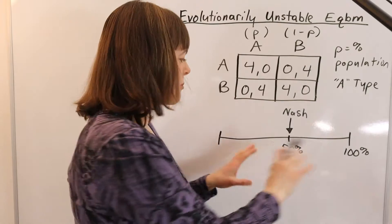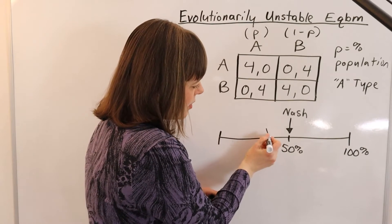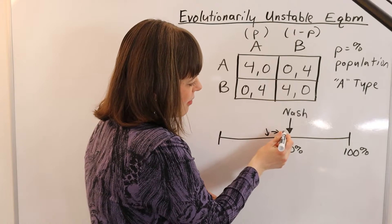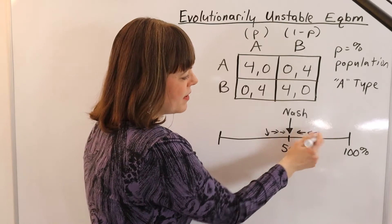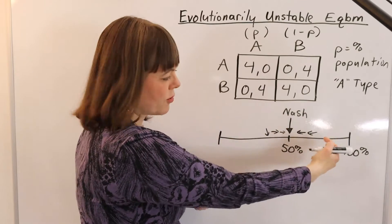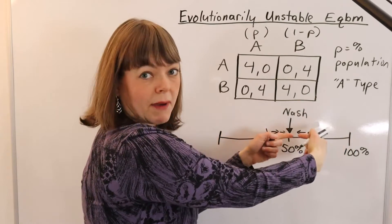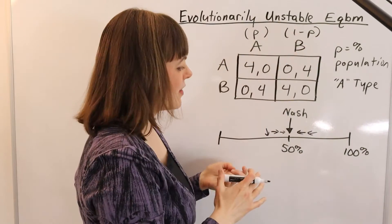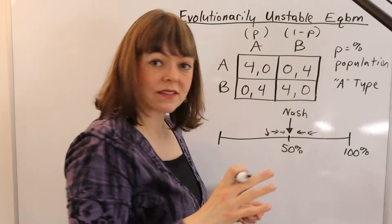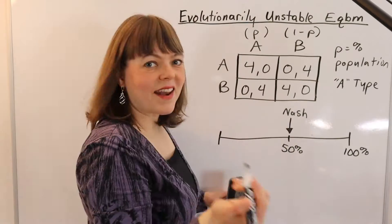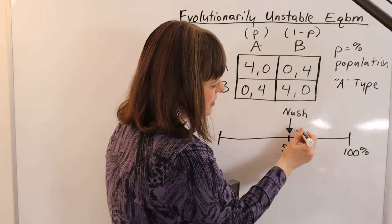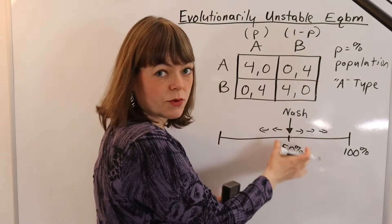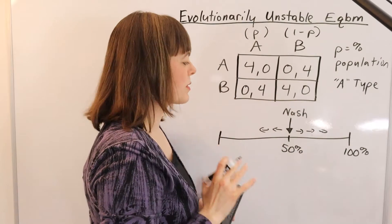We're going to represent that on this graph. If we bump a little bit away but go back to 50%, that would be a stable equilibrium. If no matter how far we bumped on both sides, we ended up tending back towards 50%, that would be stable. But this one is going to be an unstable equilibrium. Unstable equilibriums happen where once you bump a little bit away, you tend toward one extreme or another.